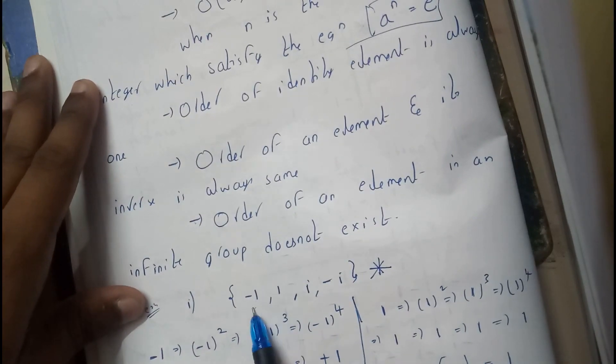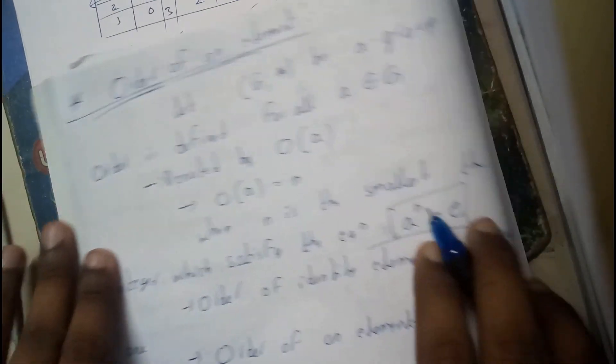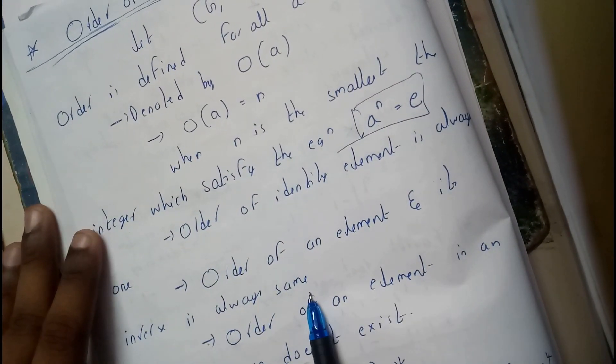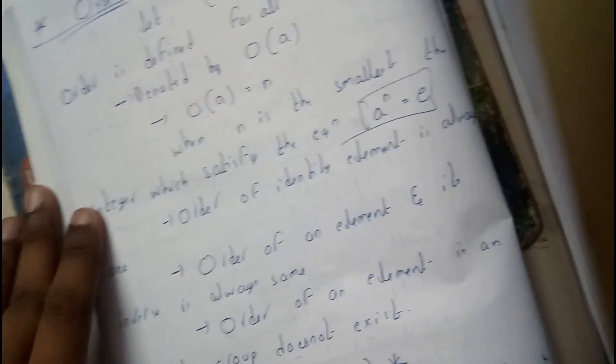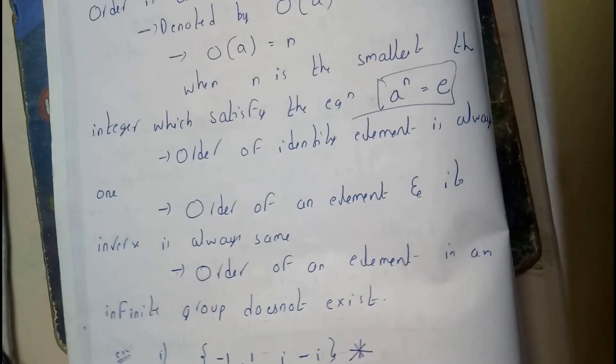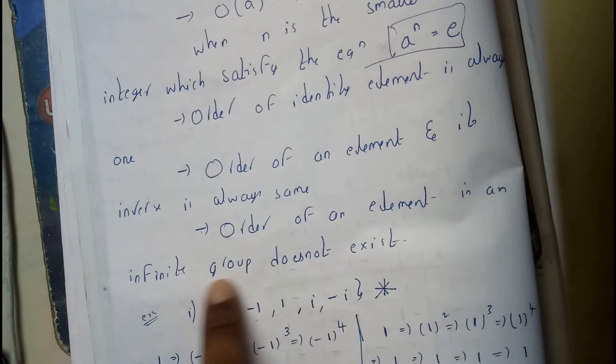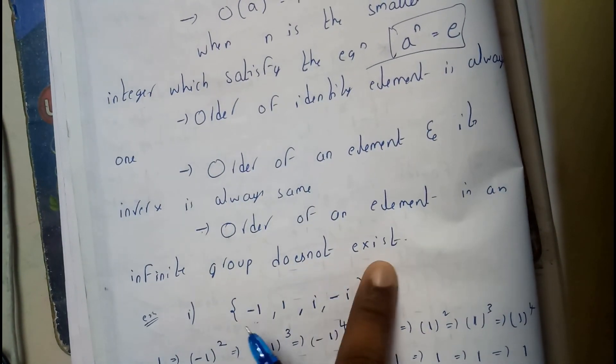Key point: some power of the element equals the identity value. Order of the identity element is always 1. Order of an element and its inverse is always the same. Order of an element in an infinite group doesn't exist.